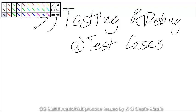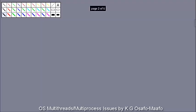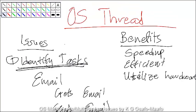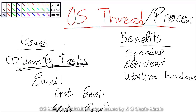This concludes the discussion on issues with operating system threads and processes. The concepts covered — identifying tasks, splitting work, balancing, managing dependencies, and testing — apply not just to threads and processes but also to multi-programming, distributed programming, ubiquitous computing, and pervasive computing. All of these involve multiple things happening at the same time, so what you've learned about OS threads and processes applies across all those areas.